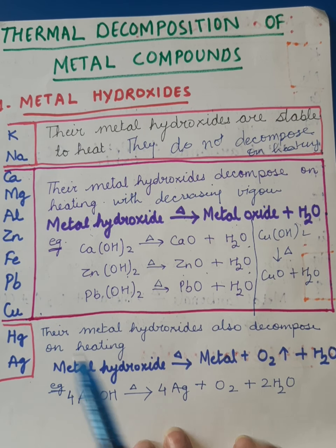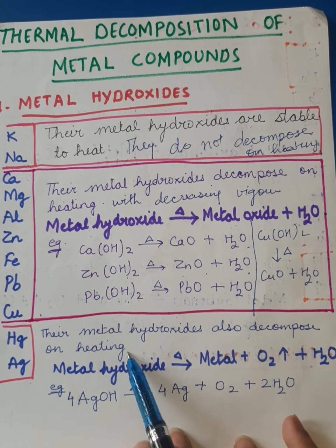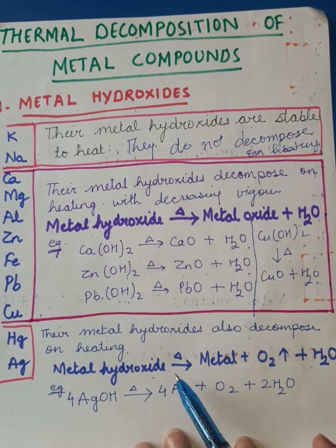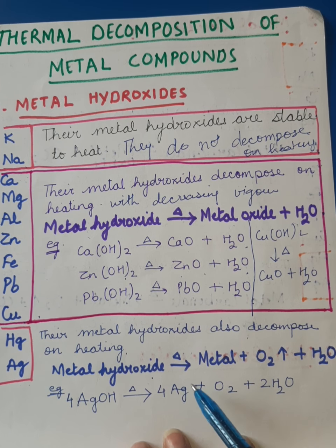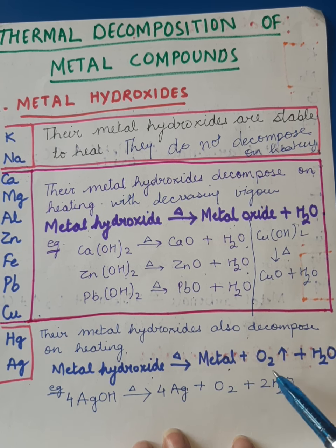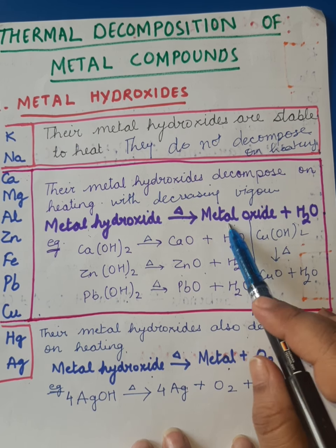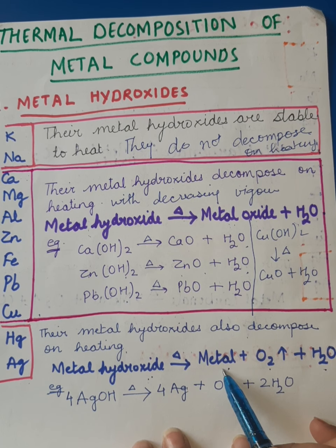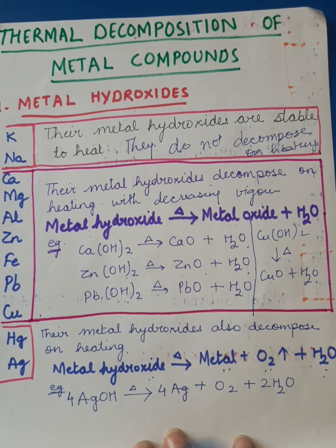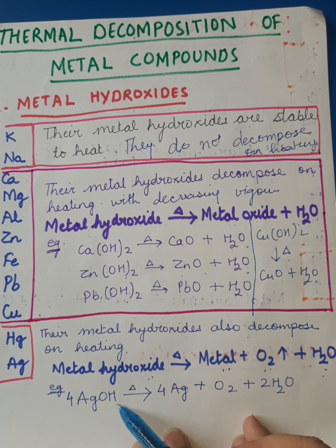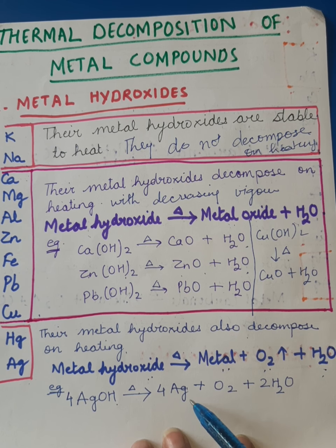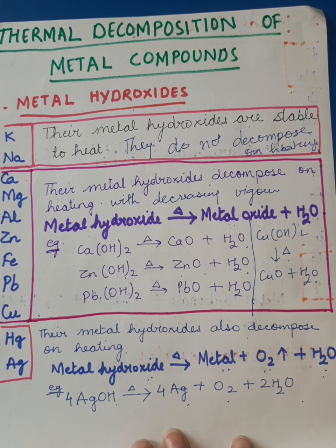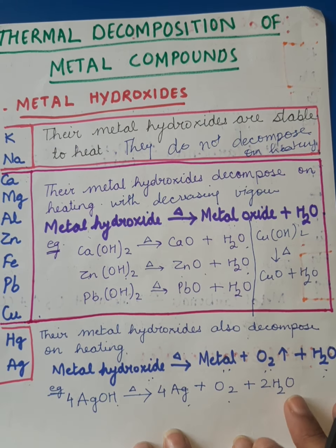Third category — mercury and silver. Their metal hydroxides also decompose on heating, but differently. Their equation is: metal hydroxide on heating decomposes into metal, oxygen, and water — not metal oxide. For example, silver hydroxide on heating decomposes into silver, oxygen, and water. Only balancing is left, which every student knows how to do.